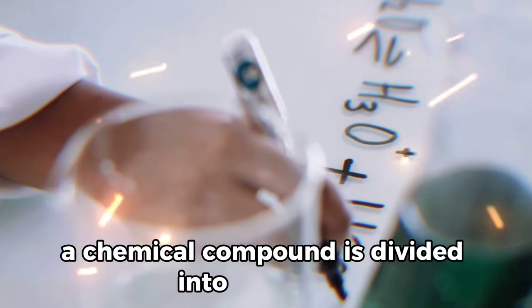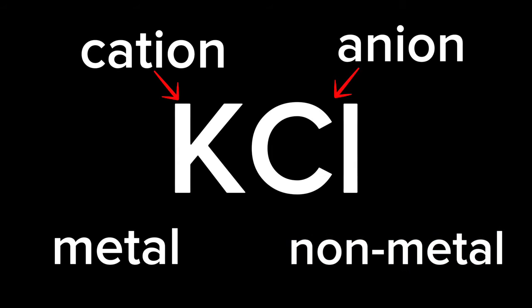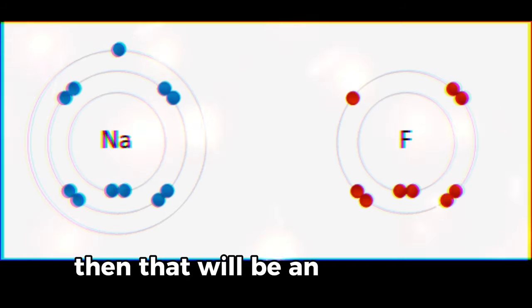A chemical compound is divided into two parts, the cation and the anion. When the cation is a metal and the anion is a non-metal, then that will be an ionic bond.